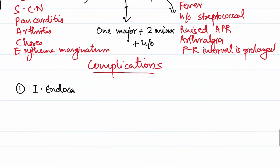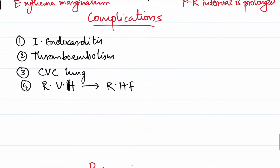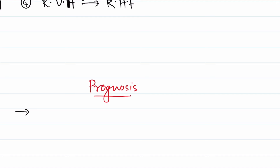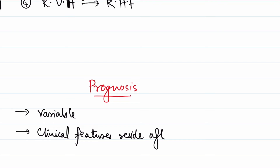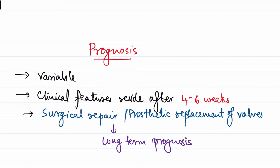Complications include infective endocarditis, risk of thromboembolism, chronic venous congestion of the lungs, right ventricular hypertrophy, and right heart failure. Prognosis is variable — clinical manifestations usually resolve after four to six weeks, but if they recur the prognosis is poor. Long-term prognosis is improved with valvular surgical repair or prosthetic replacement. That concludes our discussion of rheumatic heart disease.